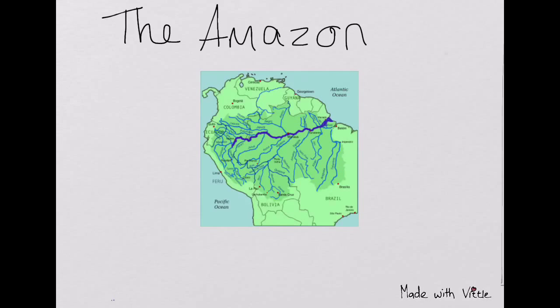Hello, today we're going to be talking about the Amazon River. The Amazon River has many tributaries — it has over 100 tributaries.